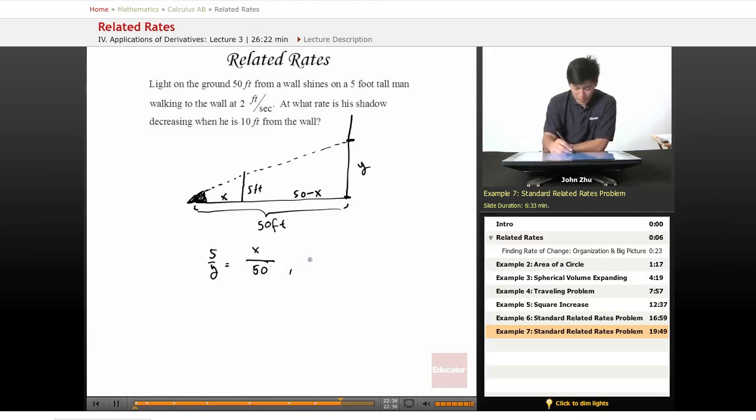We know that y equals 250 over x, which is 250 times x to the negative 1. So the change in y, dy/dt, is going to be negative 250 x to the negative 2 dx/dt.